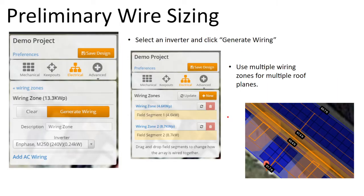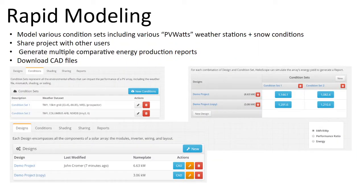Helioscope does wire sizing and voltage drop calculations, though maybe not to as detailed an extent as other software. It's really focused on preliminary design, assuming detailed design will come later. That might mean doing your shade assessment in Helioscope, then once you know your final array layout, replicating it quickly in another design software for permitting, like Energy Tool Base.